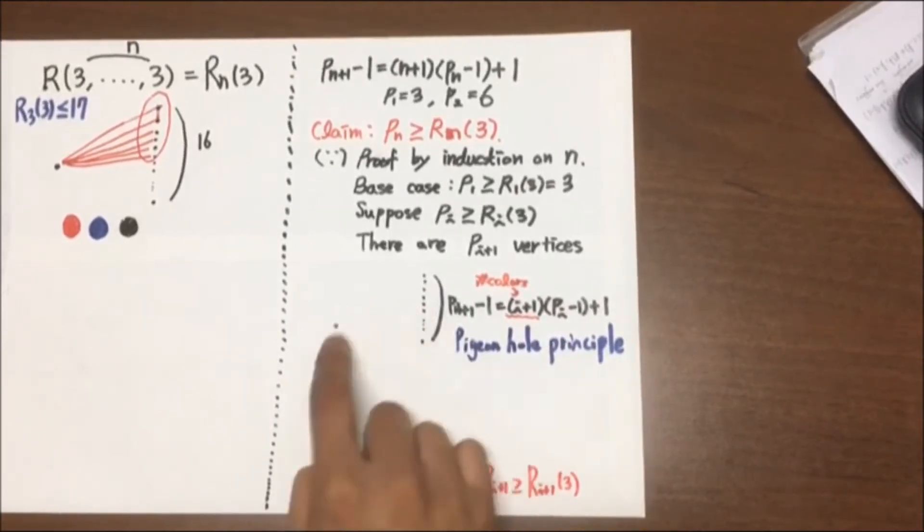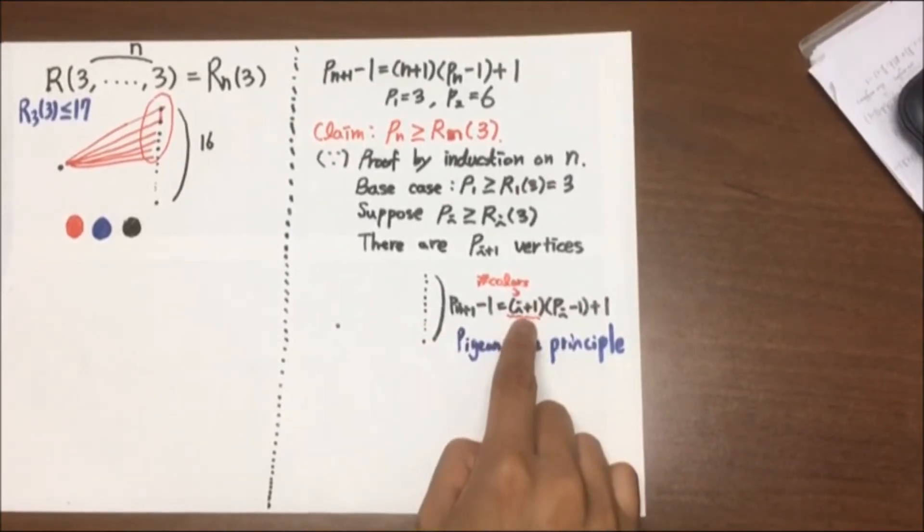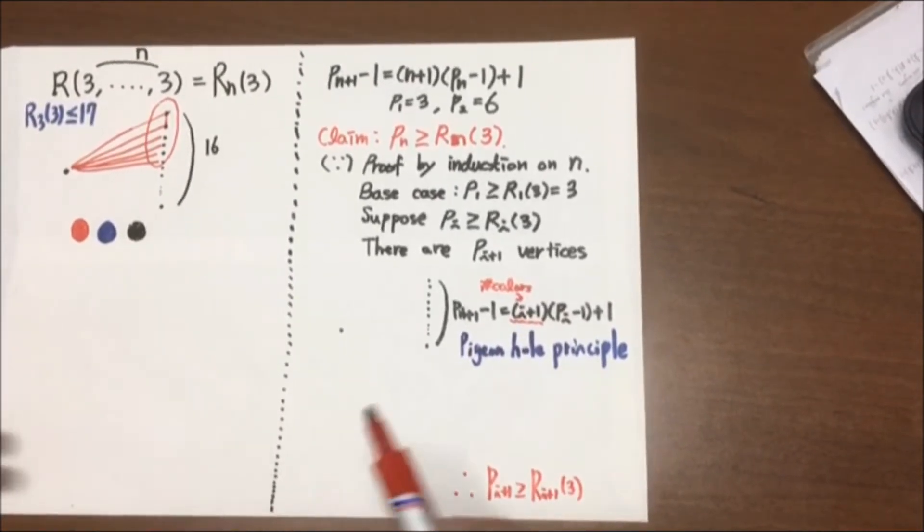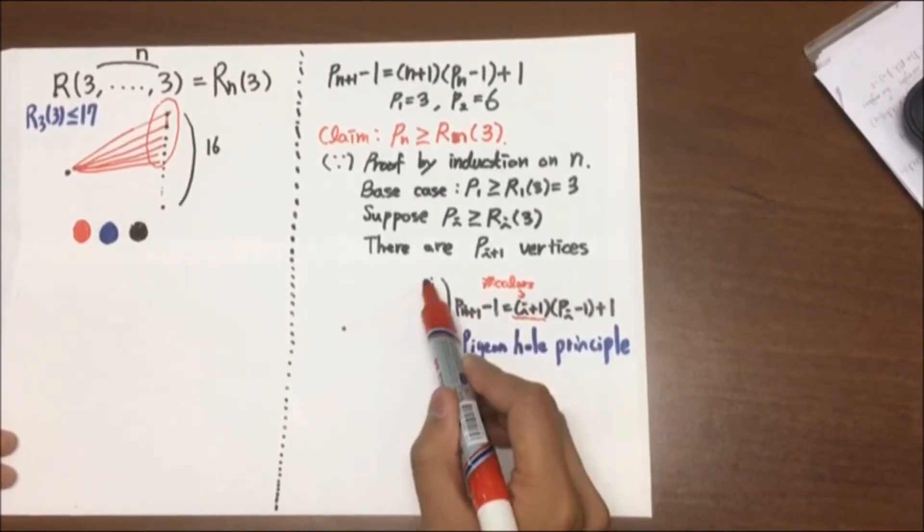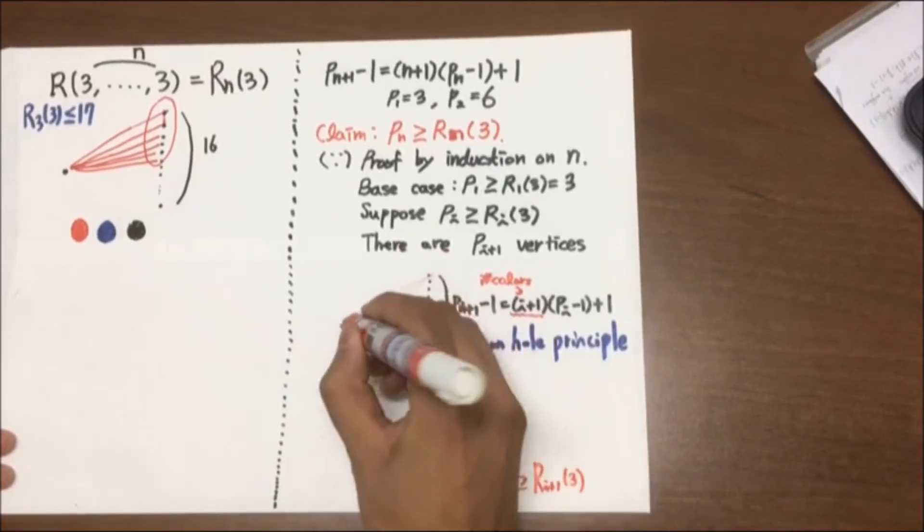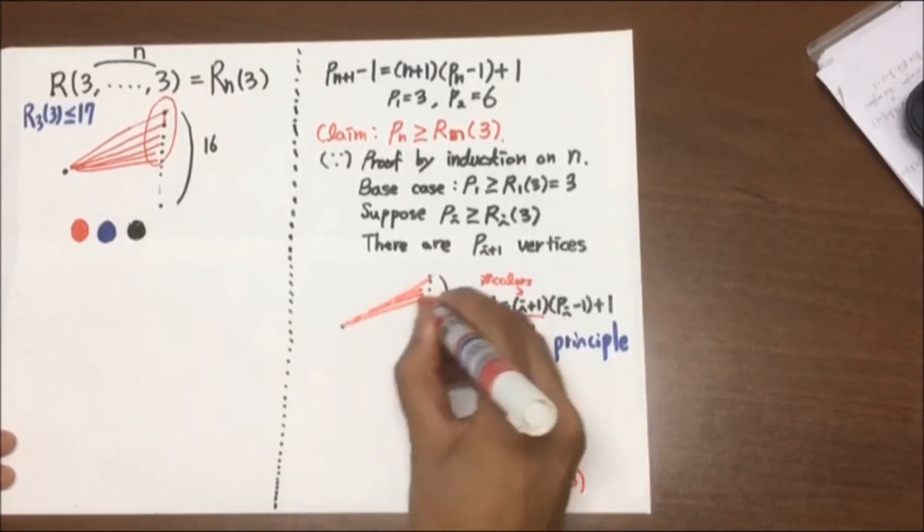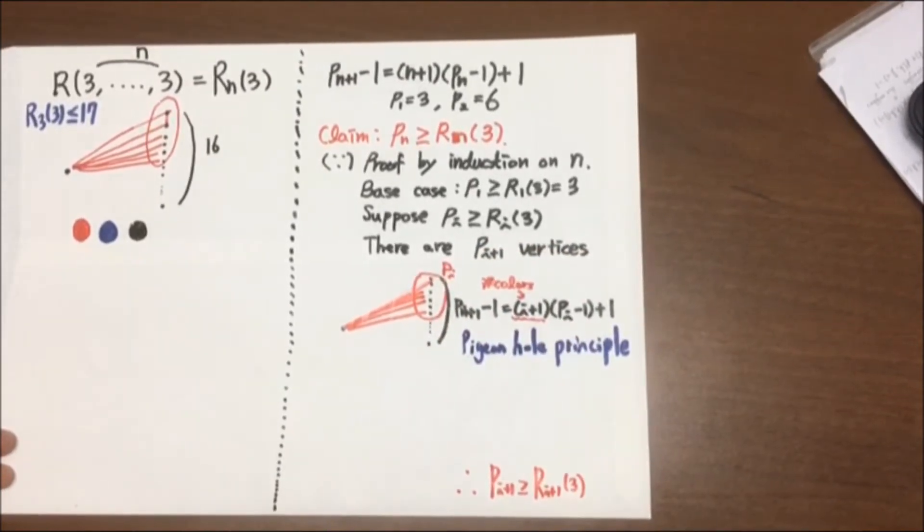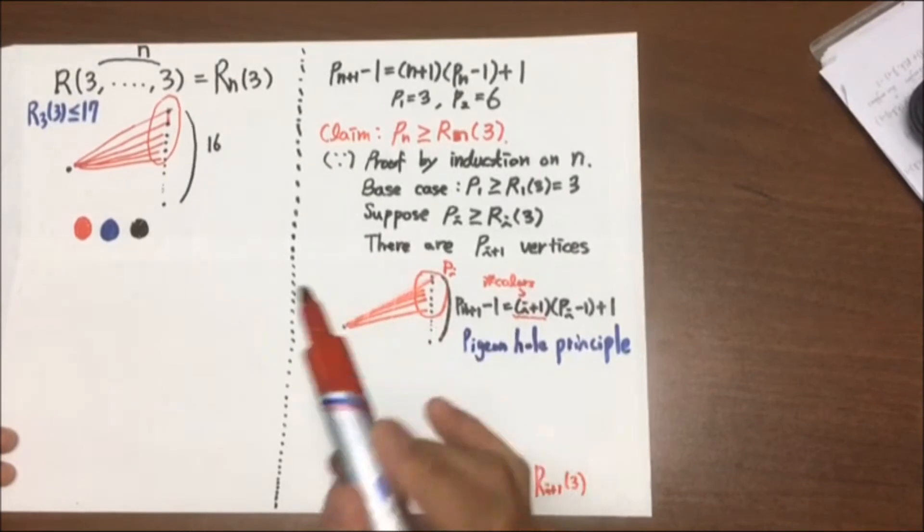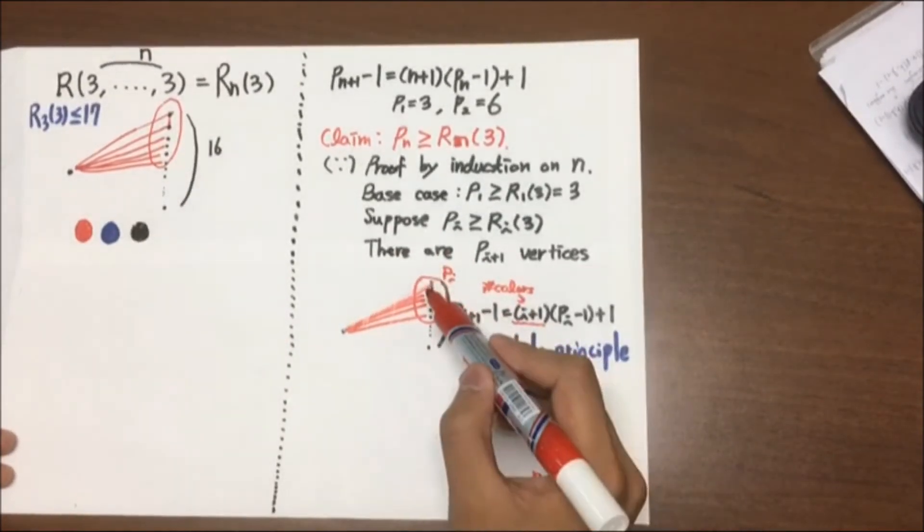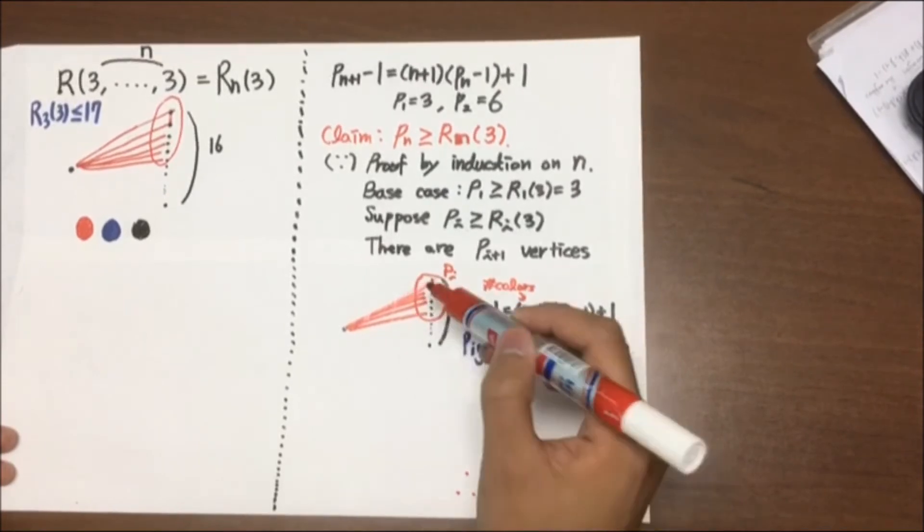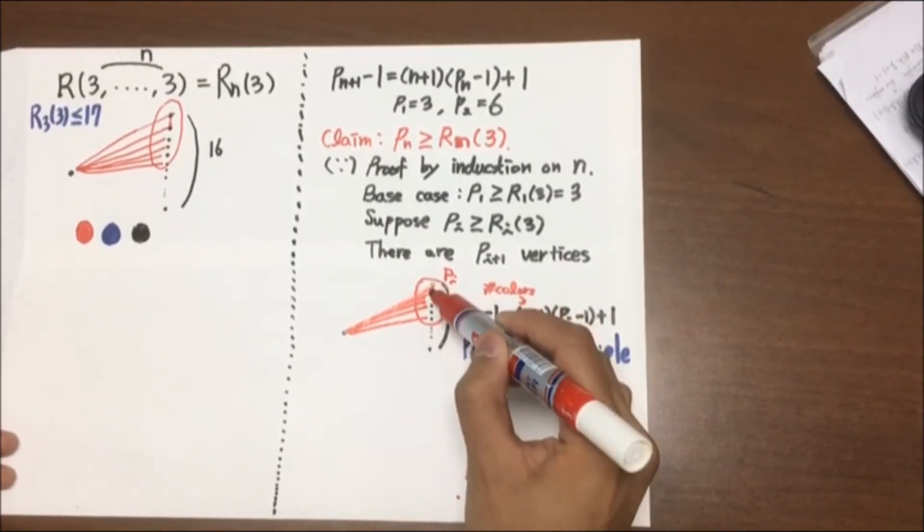If we color these edges with I + 1 colors, by the pigeonhole principle, there should be one color that should be connected with P_I vertices. And suppose we connected them with red color. And within these P_I vertices, if we connect any two with red, it creates K_3 graph.